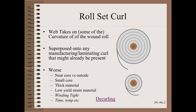Since the problem has to do with curvature, you would expect that the roll set curl would be worse near the core and worse with small diameters of core. Yet, the problem can be more generally stated to include web thickness. The severity will increase with increasing ratios of web thickness to core diameter. Obviously, web material properties also matter, and the one that is relevant is yield strain.